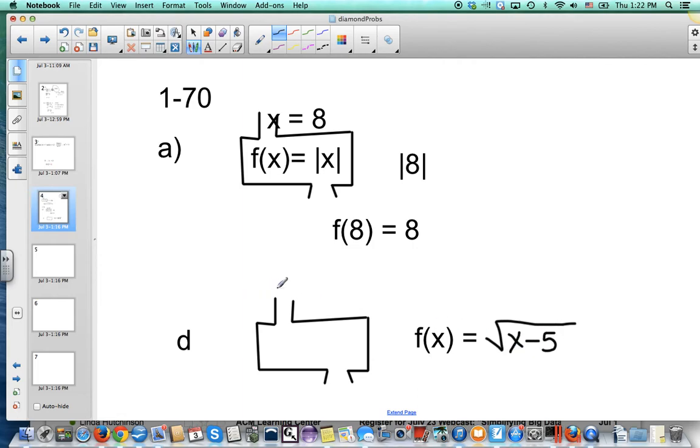They tell you to put a 3 in there. So what it's going to do is take the square root of 3 minus 5. Uh oh, that's a problem. 3 minus 5 is negative 2, and the square root of negative 2 gives you something that's not real.